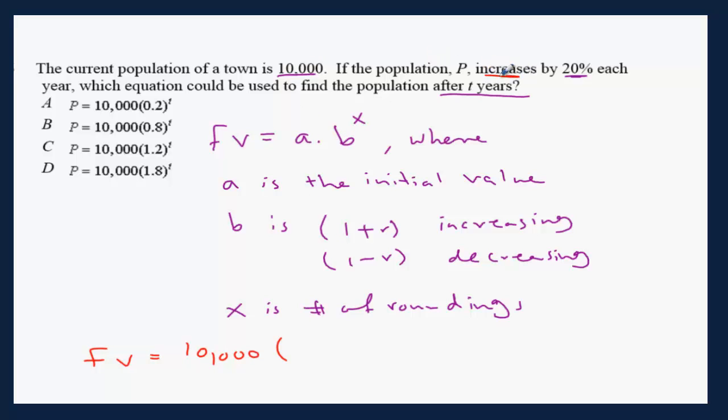Population is increasing. If it increases, you're going to use 1 plus the rate. What's the rate? Increases by 20%. Of course, we are not going to write 20% here, but instead we're going to convert the 20% into a decimal.